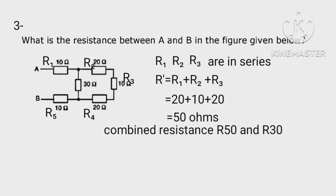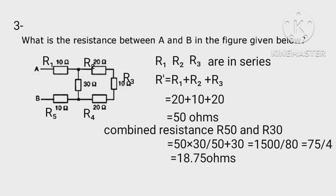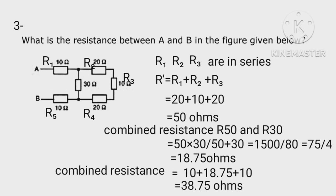R50 and R30 equals 50 times 30 upon 50 plus 30 equals 1500 by 80 equals 75 by 4 ohms equals 18.75 ohms. Now combined resistance of circuit equals 10 plus 18.75 plus 10 equals 38.75 ohms.